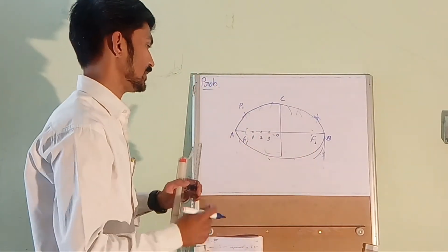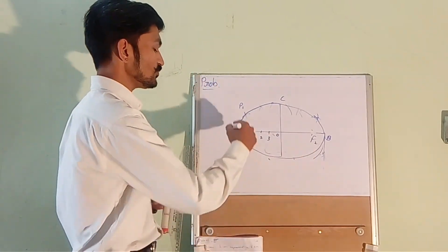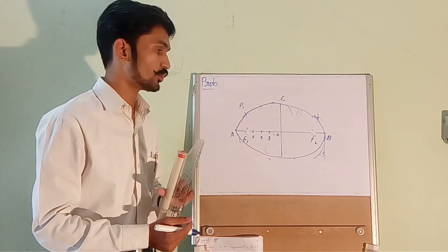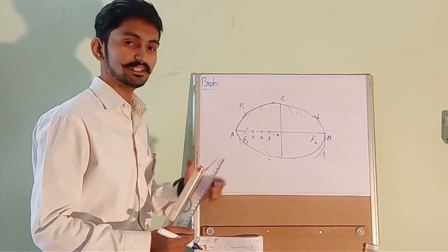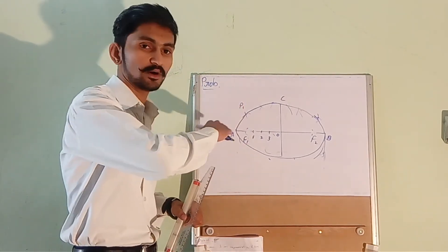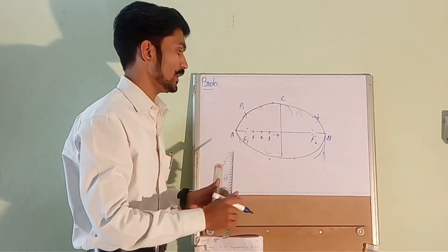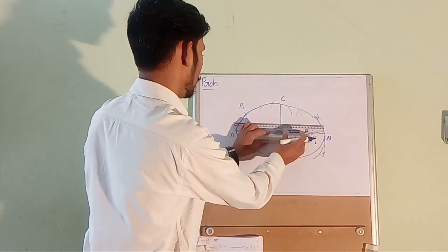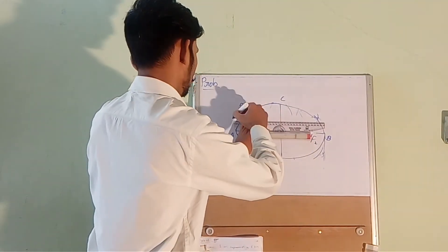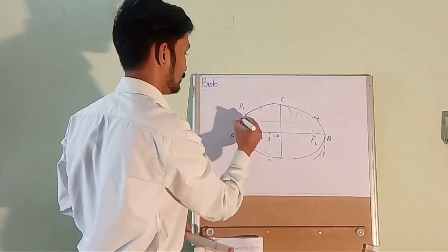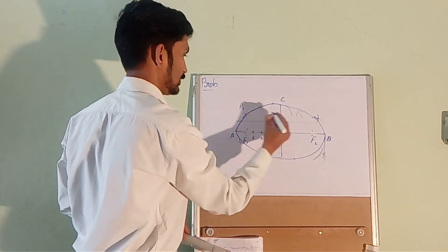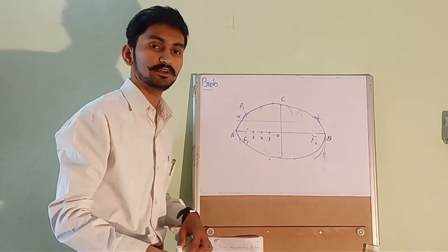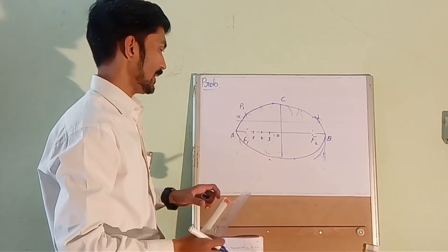Now we have our ellipse. We need to draw a tangent at a point 25 mm above the major axis AB. Draw a line 25 mm above AB and let the intersection point with the ellipse be X.